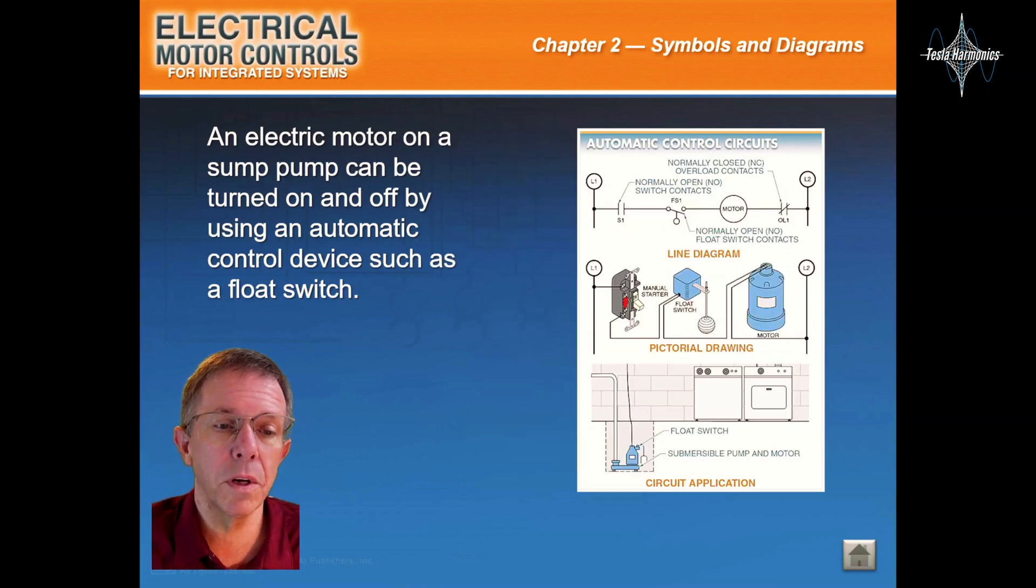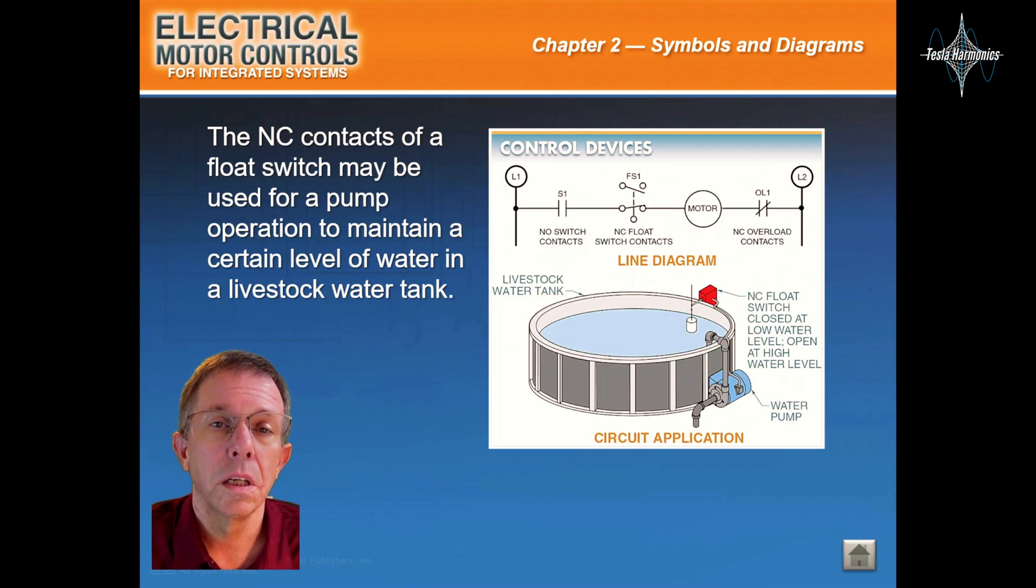An electric motor on a sump pump can be turned on and off by using an automatic control device such as a float switch. The normally closed contacts of a float switch may be used for a pump operation to maintain a certain level of water in a livestock water tank.